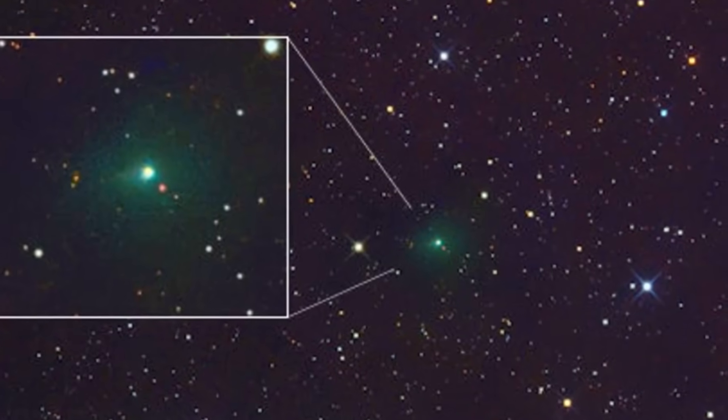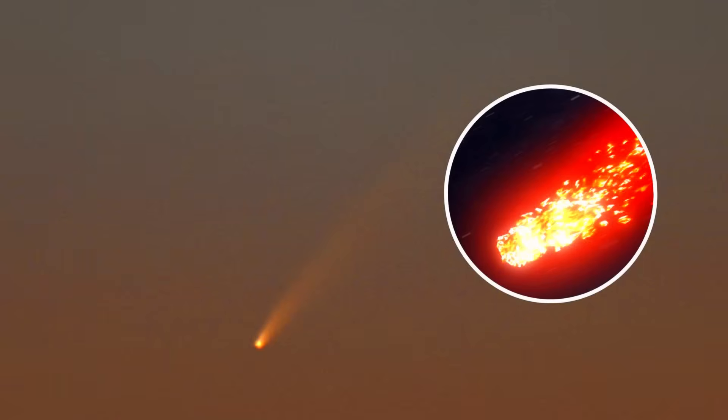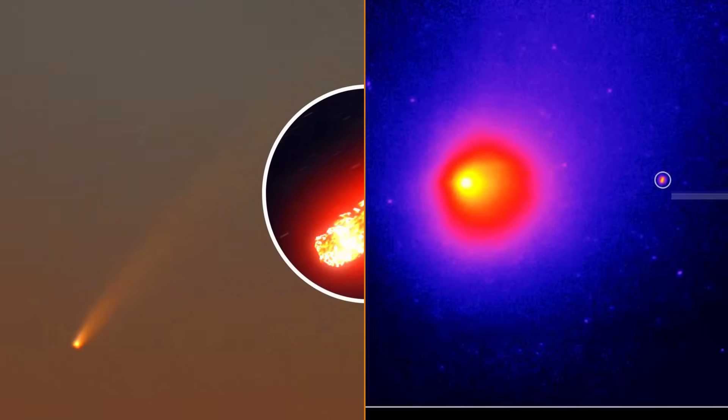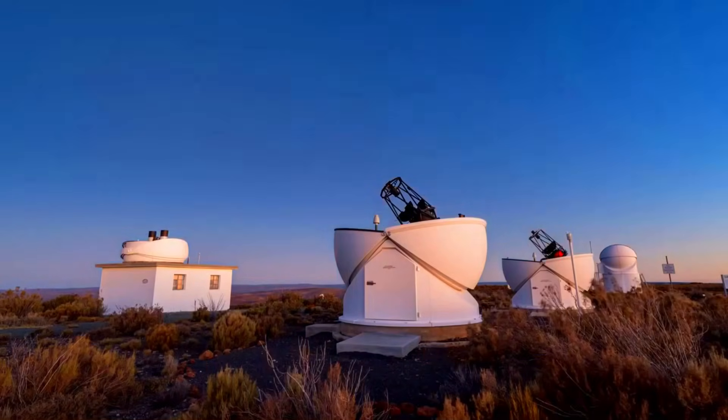Just when astronomers thought they understood comets, 3I Atlas rewrote the rules. In a single week, this colossal interstellar traveler blazed from red to emerald green, something no one expected and no telescope had ever caught in such detail.